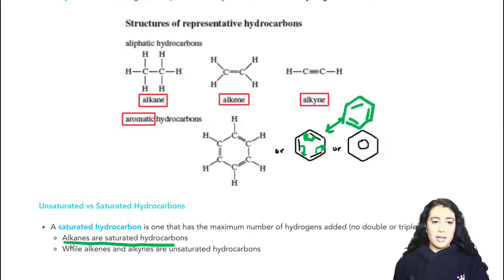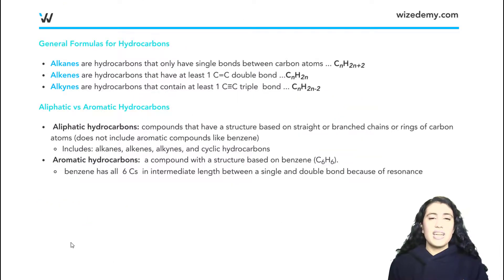Alkanes are saturated hydrocarbons, and the other ones, alkenes and alkynes, they're unsaturated hydrocarbons because they don't have the maximum number of hydrogens. So we're just looking if it has the maximum number of hydrogens or not. Next, we're looking at general formulas for an alkane, an alkene, or an alkyne. So let's look at an alkane.